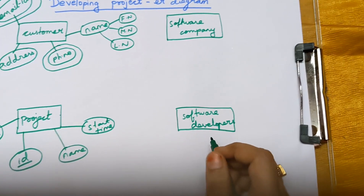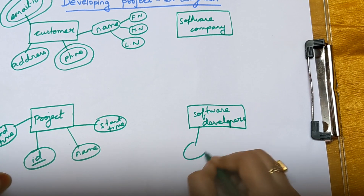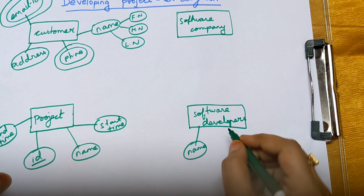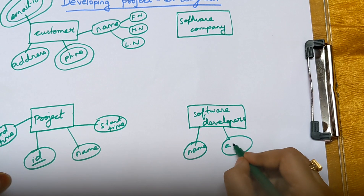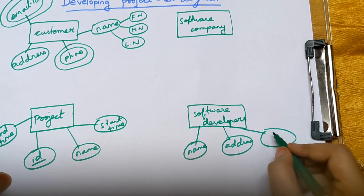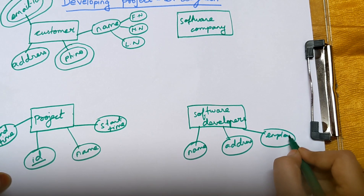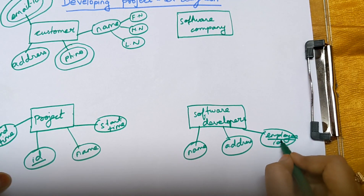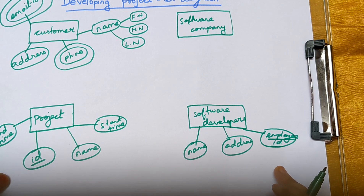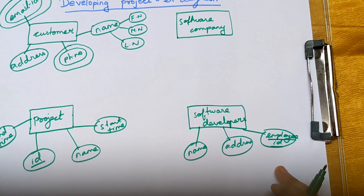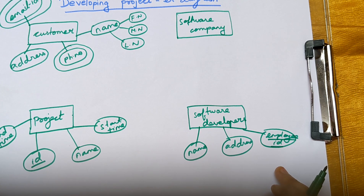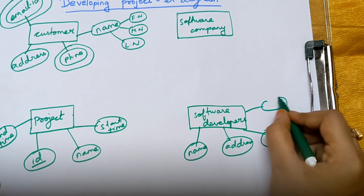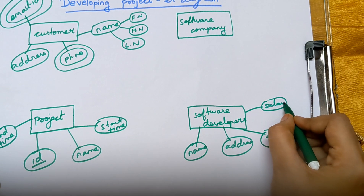Next are the attributes of software developer. A software developer will have a name, then an address. The software developer will also have an employee ID, which must be underlined because employee ID is a primary key — it will be unique for every single employee. For example, if my employee ID is 21, no other employee in the company will have the same ID. The next attribute is salary — the salary of the software developer.